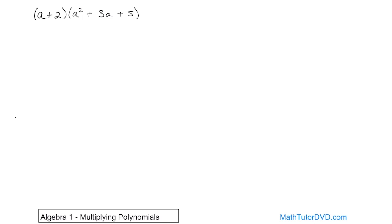For this case, a times a squared gives you a cubed, because we add the exponents. Then a times 3a gives you 3a squared — adding the exponents, 1 plus 1. Then a times 5 is 5a. So we're done distributing the first term.